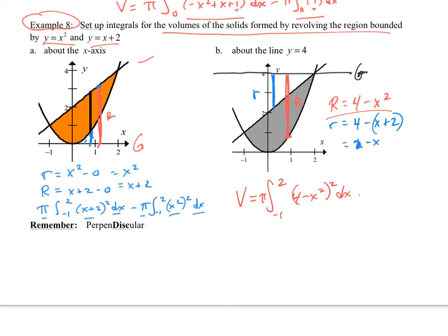Minus my little r, pi, negative one to two. My little r is two minus x. Pi r squared dx. There it is. The great summing machines. Finding the volume for us.